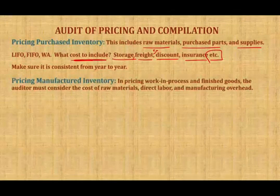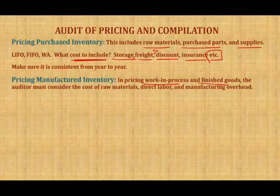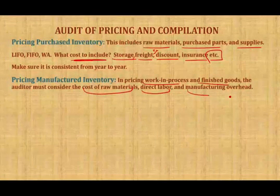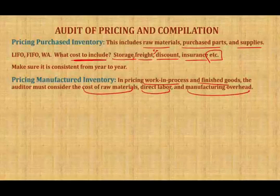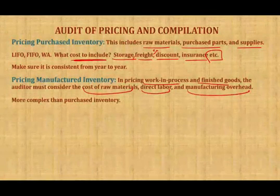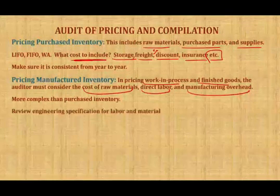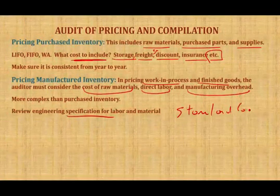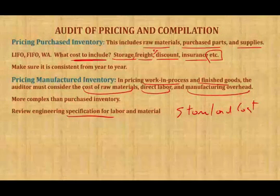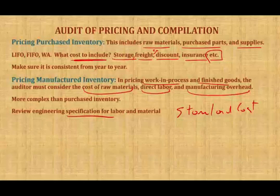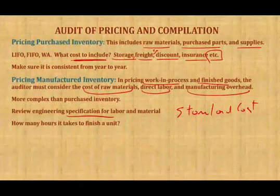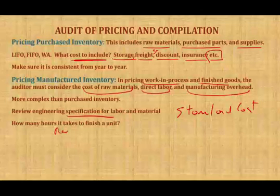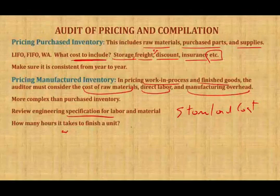If you're dealing with manufactured inventory, you need to look at work in process and finished goods. The process is more complex because you have to account for direct material, direct labor, and manufacturing overhead — all three go into work in process. What do we rely on? We rely on the standard cost, and we also review engineering specifications for labor and material. The engineer specifies how many units of material and how long it should take, which is essentially the standard cost — telling us what is work in process.